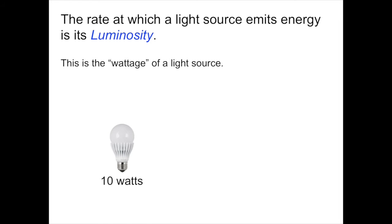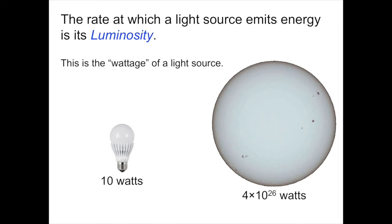A watt is a measure of energy per second. Specifically, it's one joule per second, a joule being a metric unit of energy. The sun is a very big source of light and produces an enormous amount of energy. The wattage of the sun is about 4 times 10 to the 26 watts, or about 400 trillion trillion watts. The sun is a lot brighter in absolute energy output than a 10 watt light bulb.